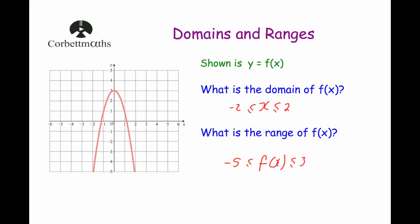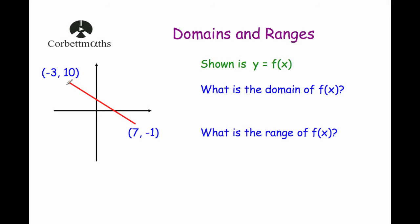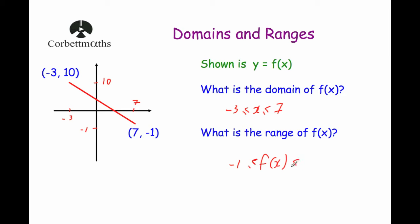Let's have a look at our next question. We've got a line graph that goes from the point negative 3, 10 down to 7, negative 1. The question asks: what is the domain of f(x)? So those are our x values. As you can see, we've started at negative 3 and gone all the way to 7. So our domain is x is bigger than or equal to negative 3, but less than or equal to 7. And what is the range? The heights — the highest point of the graph is 10, and the lowest point is negative 1. So f(x) is bigger than or equal to negative 1, but less than or equal to 10.